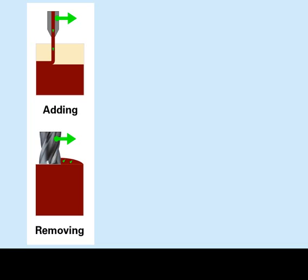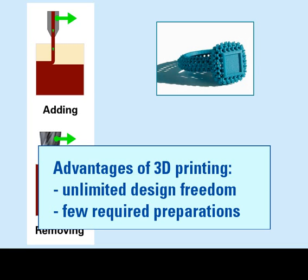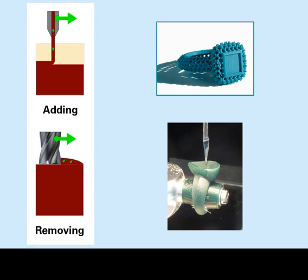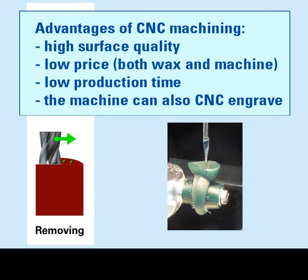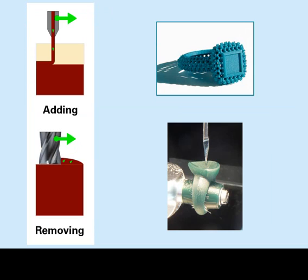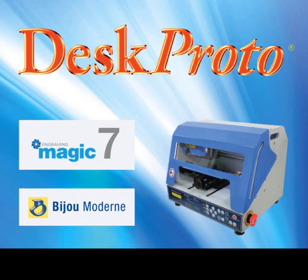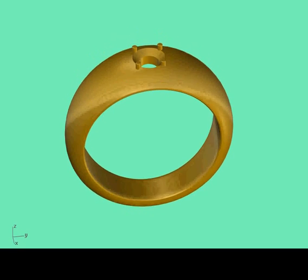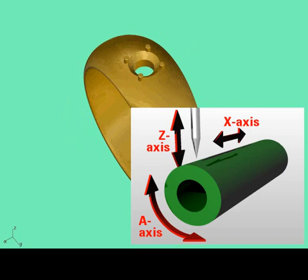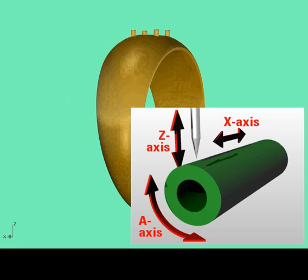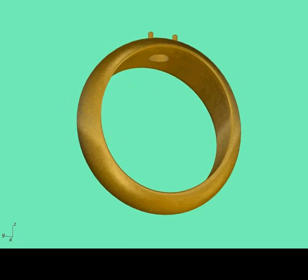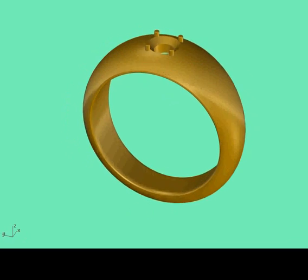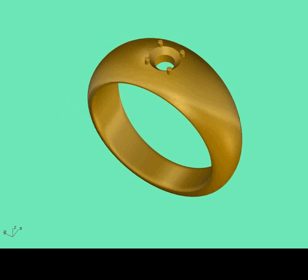This can be done in two ways: either by adding wax, which is done on the 3D wax printer, or by removing wax, which is done on the CNC milling machine. This video is about CNC machining. We were happy that Dutch reseller Bijoux Moderne welcomed us to shoot this video on their Magic 7 machine. We'll use this simple ring design to show the most basic way of wax ring machining: a wax tube which is machined while rotating on the machine's rotary axis. The inside diameter of the ring needs to be created later using manual tools. For more advanced CNC technology, see our other jewelry videos.